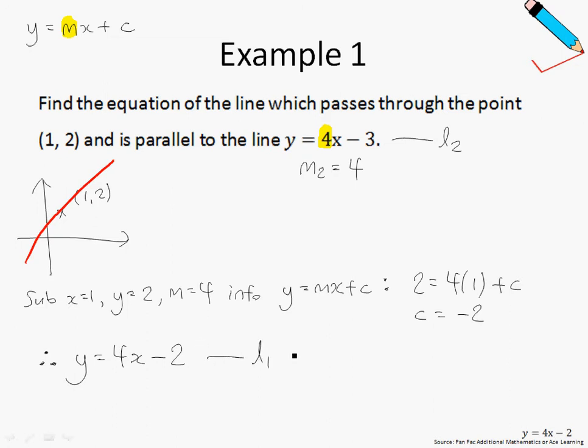Let's call this line L1. Before we move on to the next example, I just want to highlight that L1 and L2 are essentially parallel because their gradients, which I'm highlighting now over here, are the same. So the gradients of L1 and L2 are the same. That is to say m1 equals m2 equals 4. Therefore, we know that L1 and L2 are parallel.